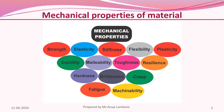Some of the typical mechanical properties of material include strength, toughness, hardness, brittleness, malleability, ductility, creep, resilience, and fatigue. Let us discuss the properties one by one.